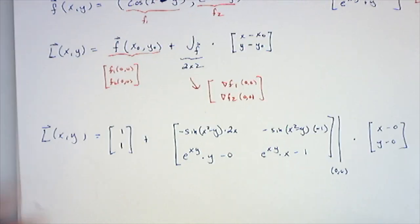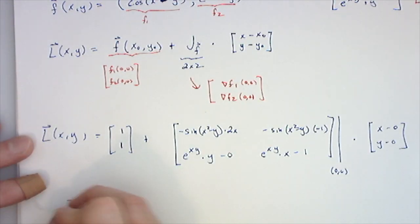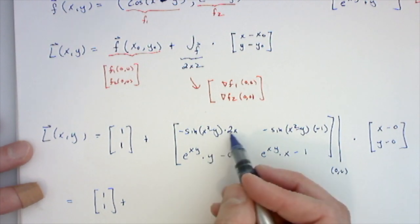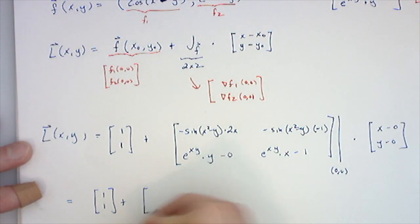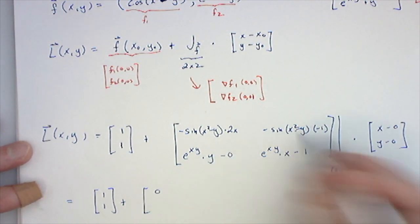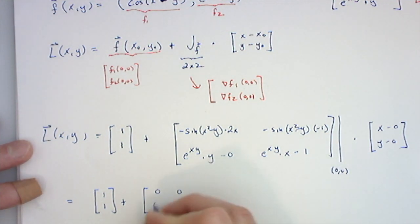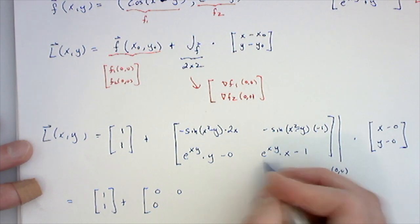Oh well, that happens sometimes. Here's what we get for the linearization: it's [1, 1] plus... let's see, at the point (0,0): sin(0) times 0 is 0, sin(0) times -1 is 0...